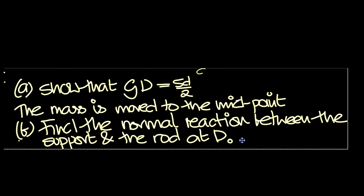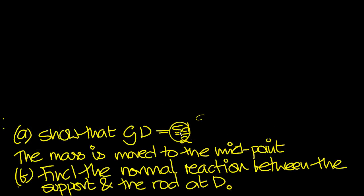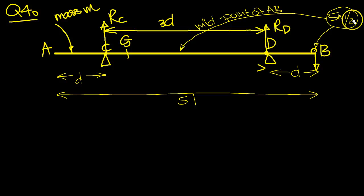So the first part of the question says show that GD equals 5D over 2. Let's go back to our problem, part A. This is D. So let's call GD as X here.